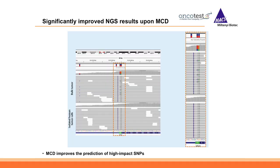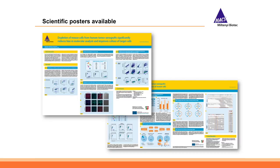One last example is prediction of high-impact single nucleotide polymorphisms, a key aspect of whole exome sequencing. Without depletion, we detected a heterozygous deletion of the start codon of the GRIA3 gene, but after depleting the mouse cells, this mutation was gone. It was not a real mutation in the tumor cell but rather mouse reads mapping to the human genome, causing a misinterpretation of the data. For more details on molecular analysis, please visit our booth — we can send you posters as PDFs.